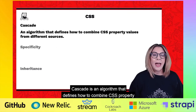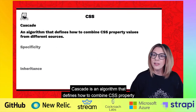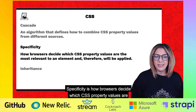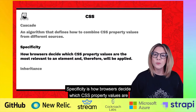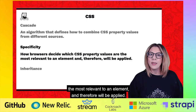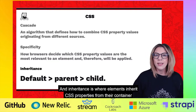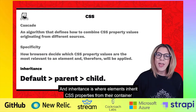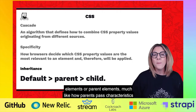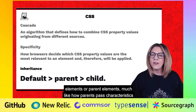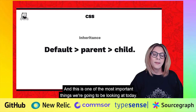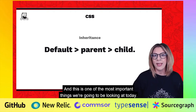Cascade is an algorithm that defines how to combine CSS property values from different sources. Specificity is how browsers decide which CSS property values are the most relevant to an element and therefore will be applied. And Inheritance is where elements inherit CSS properties from their container or parent elements, much like how parents pass characteristics down to their children in real life. And this is one of the most important things we're going to be looking at today.